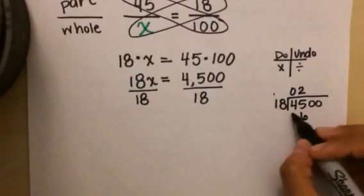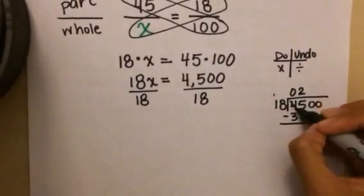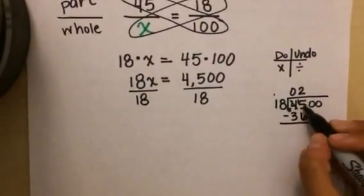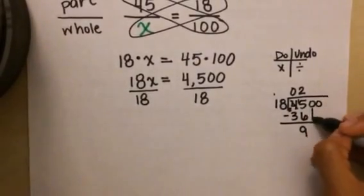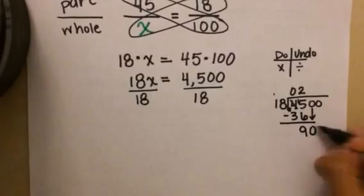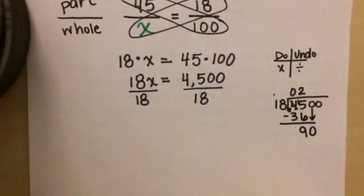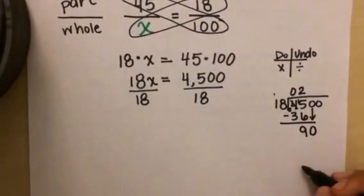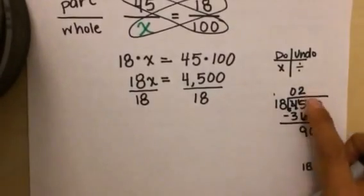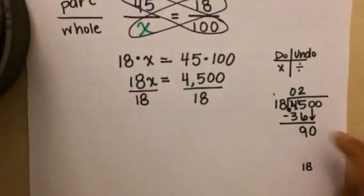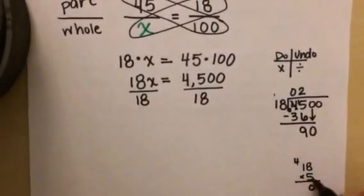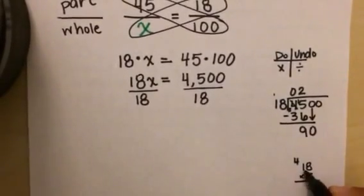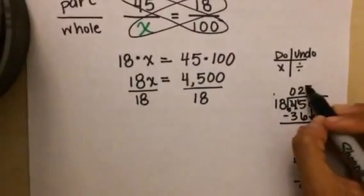2 times 1 is 2, plus 1 is 3. 15 take away 6 is 9, and 3 take away 3 is nothing. Now I'm going to bring down my zero. How many times does 18 go into 90? I don't know, so I'm going to have to guess and check. I know if 18 times 2 is 36, it's probably going to be about 4 or 5 times. Oh, look at that! 5 times 1 is 5, plus 1, plus 4 is 9. It goes in exactly 5 times.